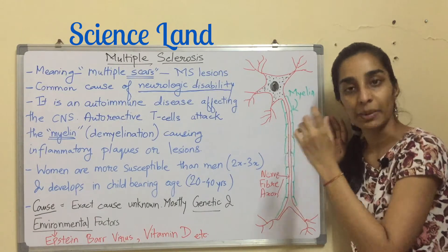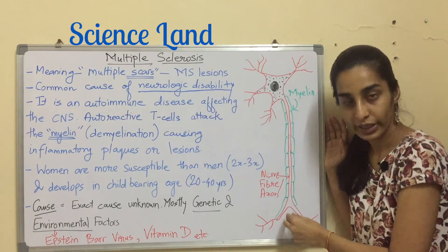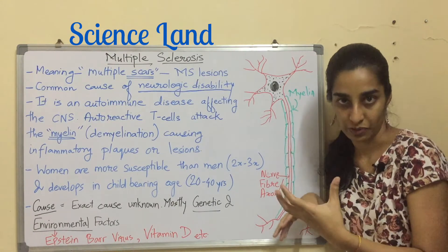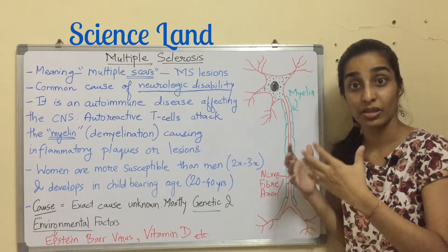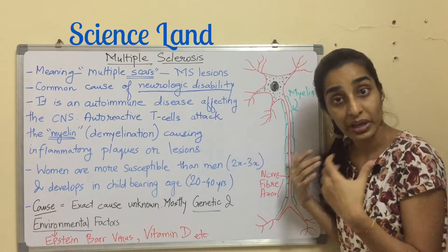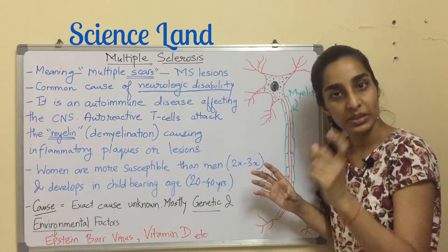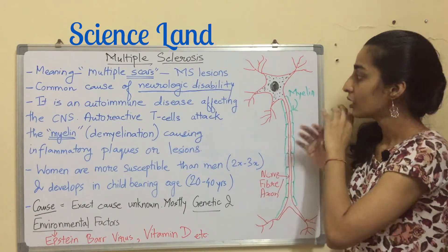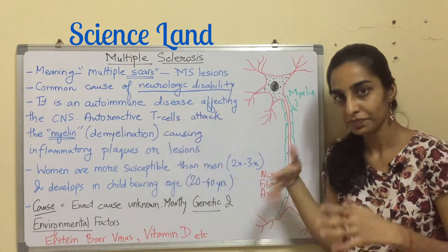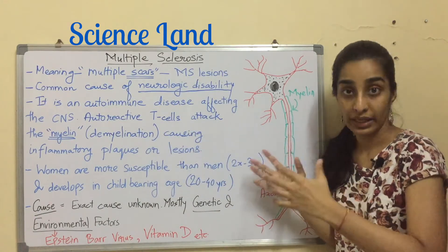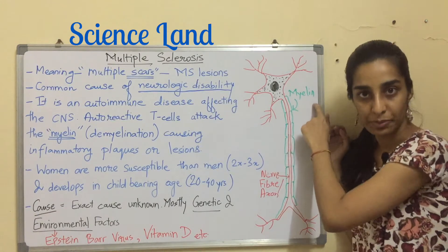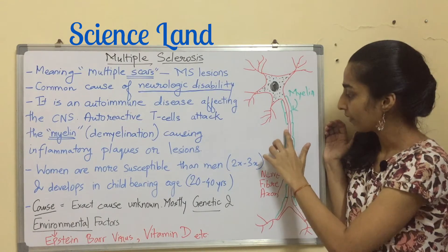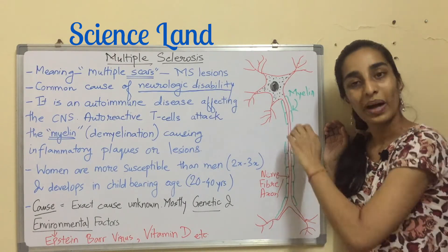Myelin is the green substance shown here — it is an insulating substance which protects this fiber. Myelin is a fatty substance; it is naturally present in the body, not an external substance injected into the body. What happens is the autoreactive T cells somehow think that this myelin substance is actually an antigen, and they start attacking the myelin — they eat up the myelin.